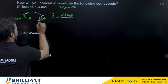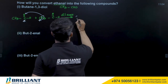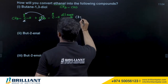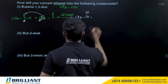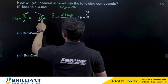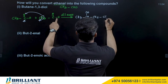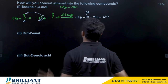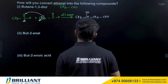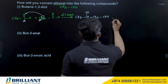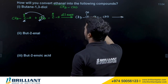From the second compound, take one alpha hydrogen and transfer it to the oxygen, making it OH, then connect to the carbon atom. The product is CH3CHOH–CH2–CHO. This compound contains only one alcohol group.